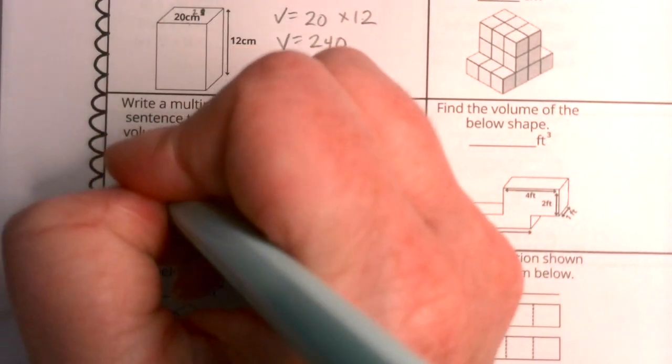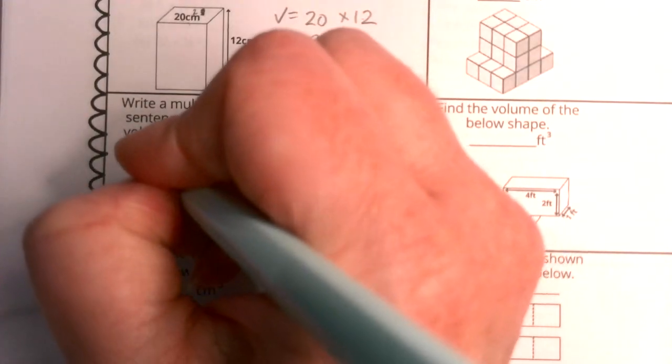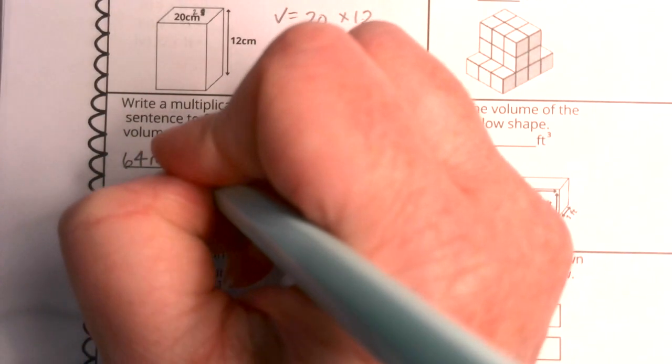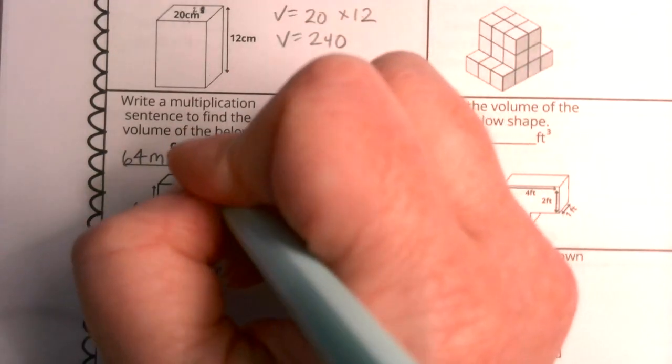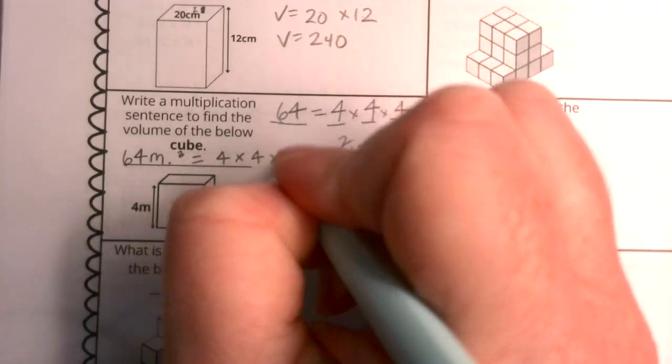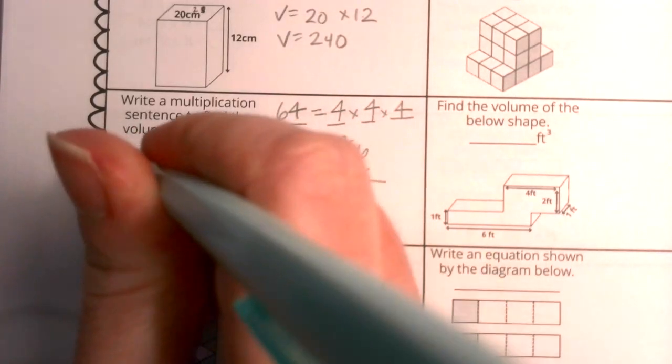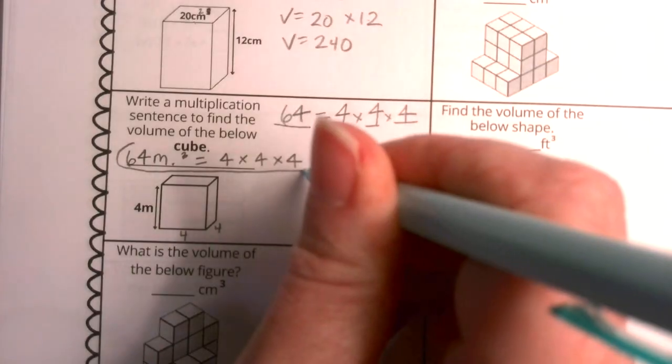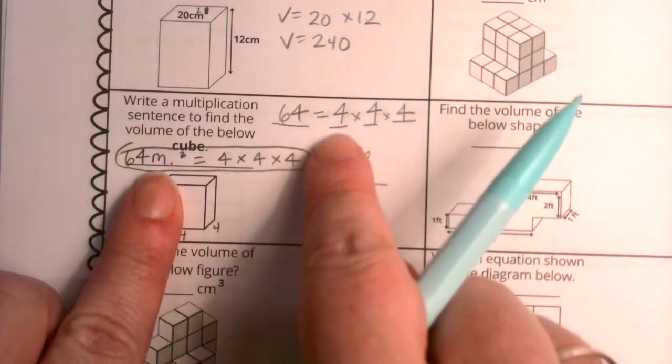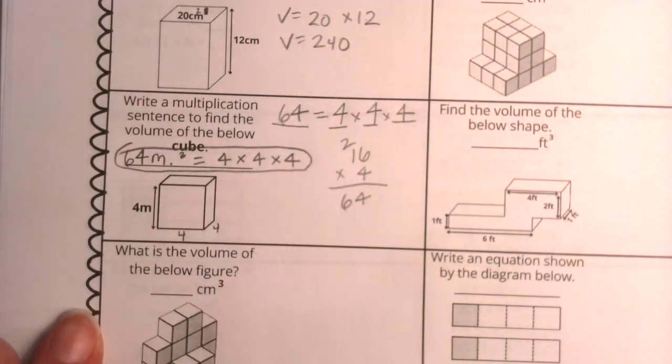When we write it in our sentence, let's go ahead and say what that 64 means. That 64 means the volume, so that's going to be 64 meters cubed. And now we have a multiplication sentence where we have the balance between the dimensions and the volume.